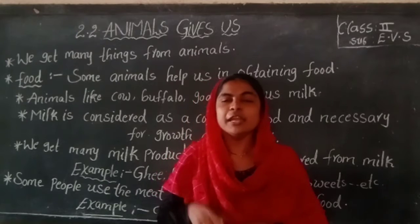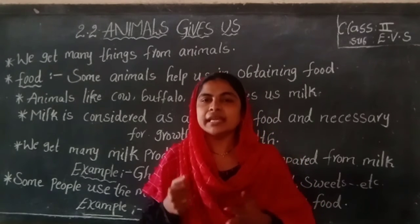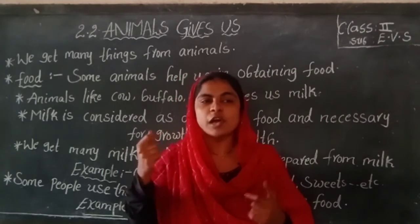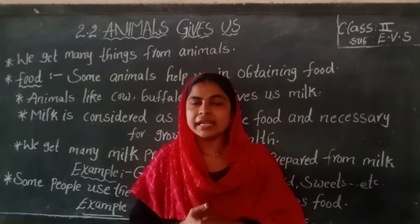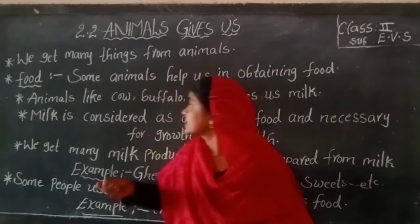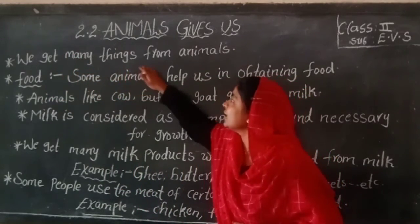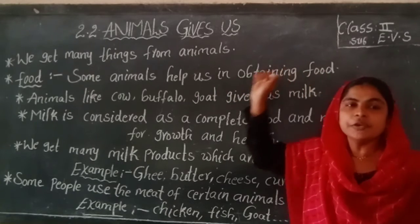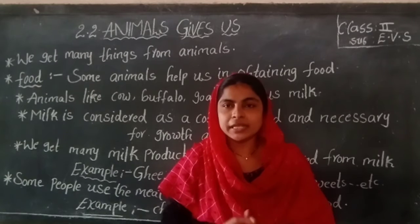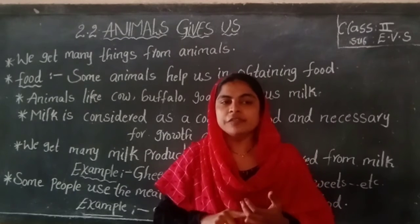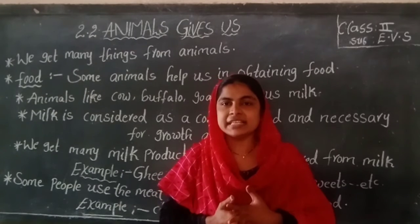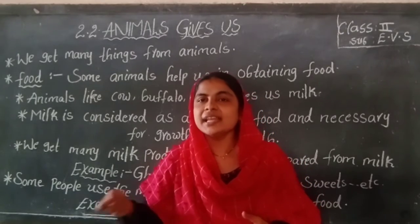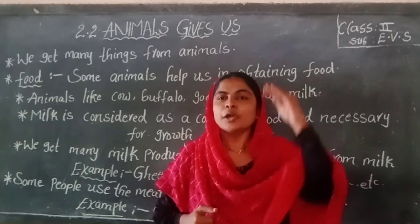Animals are very useful for us. We get many things from animals. Let us know some of the uses of animals and the important things we get from animals. First one: food. Some animals help us in obtaining food. Animals like cow, buffalo, and goat give us milk. Milk is considered as a complete food and it is necessary for growth and health.